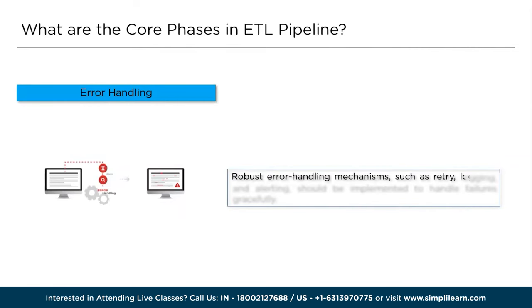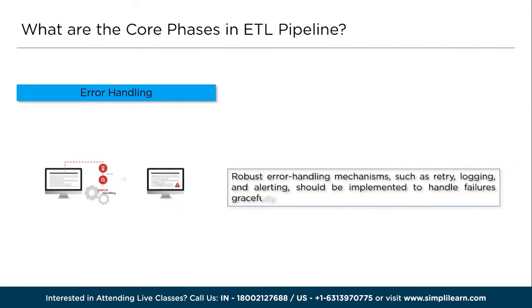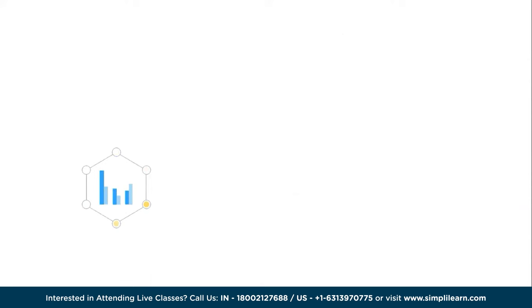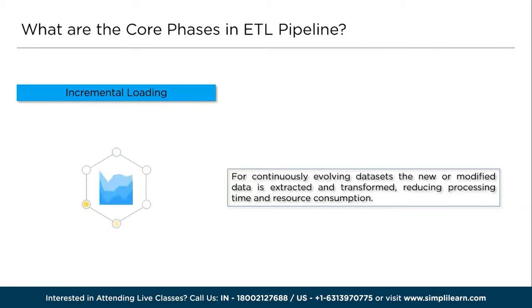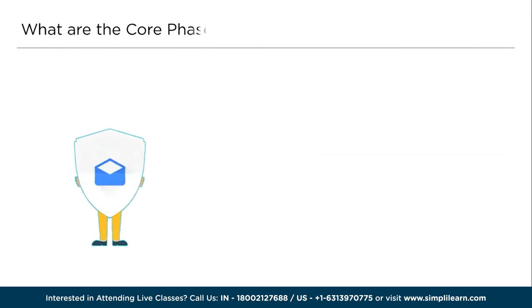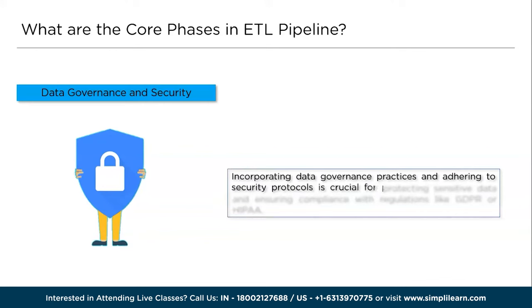Third, error handling and monitoring: robust mechanisms such as retry, logging, and alerting should be implemented to handle failures gracefully. Monitoring tools can provide real-time insights into pipeline performance, allowing quick identification and resolution of issues. Next, incremental loading: for continuously evolving datasets, loading only the new or modified data — rather than the entire dataset each time — significantly improves pipeline efficiency, reducing processing time and resource consumption. Finally, data governance and security: incorporating data governance practices and adhering to security protocols is crucial for protecting sensitive data and ensuring compliance with regulations like GDPR or HIPAA.